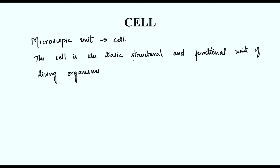What is meant by structural and functional unit? The structural unit means the cell forms the structure of the organism — the body, the outer structure. The functional unit means they are going to carry out all life processes, such as nutrition, excretion, respiration. These are the functions going to happen inside the organisms. So the cell is the basic structural and functional unit of living organisms.